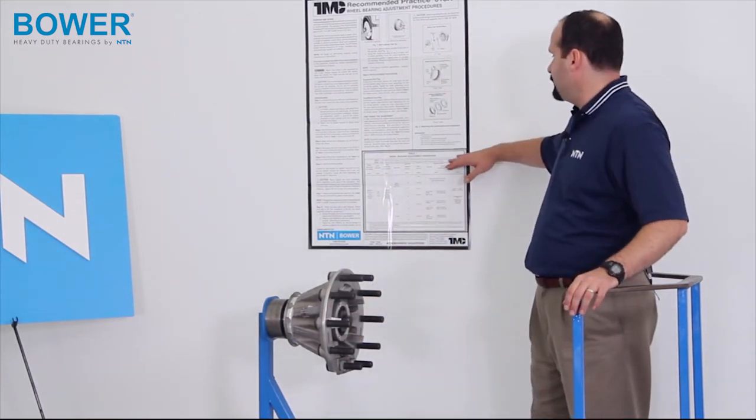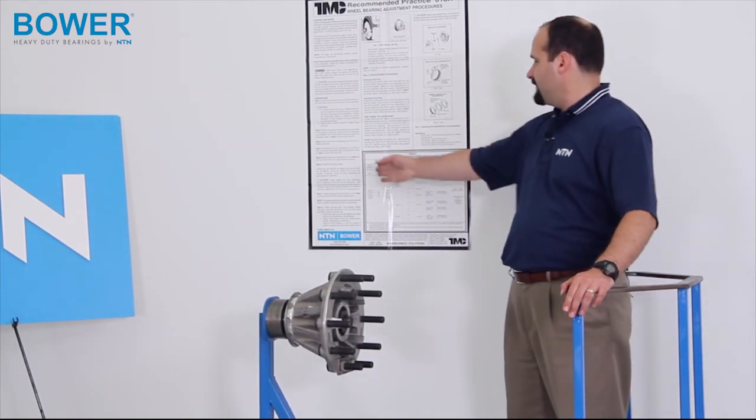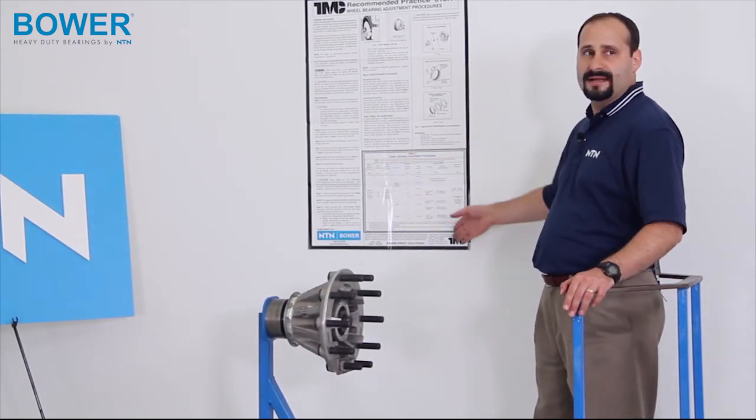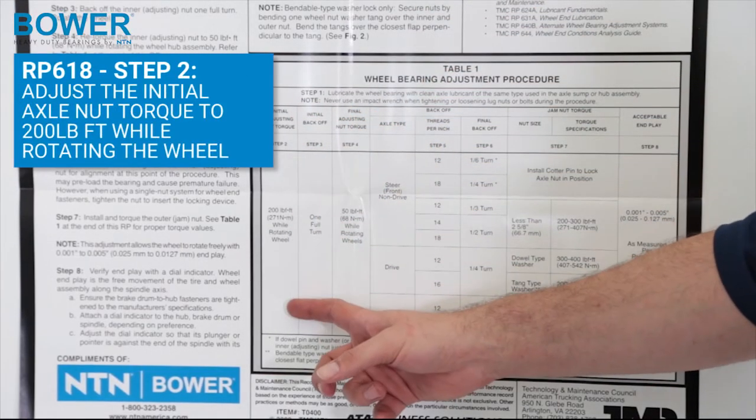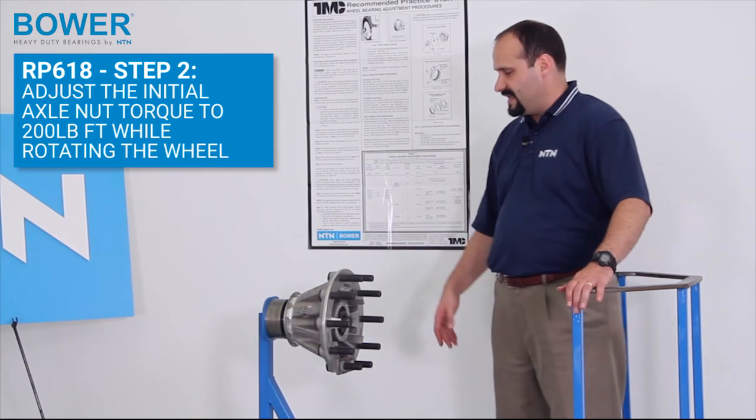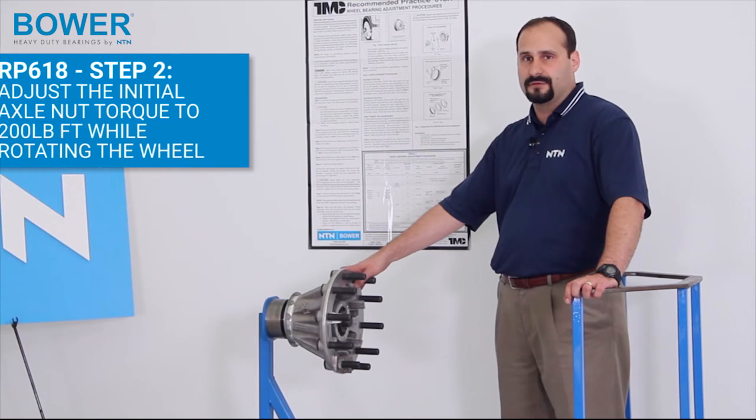So we're through with step one. The table is a little bit confusing because step one goes all the way across the top and then we'll have the next steps one, one at a time. So step two, our initial adjusting nut torque. In that we're going to take this, while spinning this wheel, we're going to tighten down to 200 foot-pounds of torque.